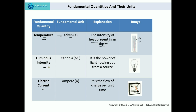Next is luminous intensity — it is the power of light flowing out from a source. An electric bulb illustrates this: the power of light flowing out from it is known as luminous intensity, and the unit in which it is measured is candela. The next is electric current — it is the flow of charge per unit time, and the unit in which electric current is measured is ampere.